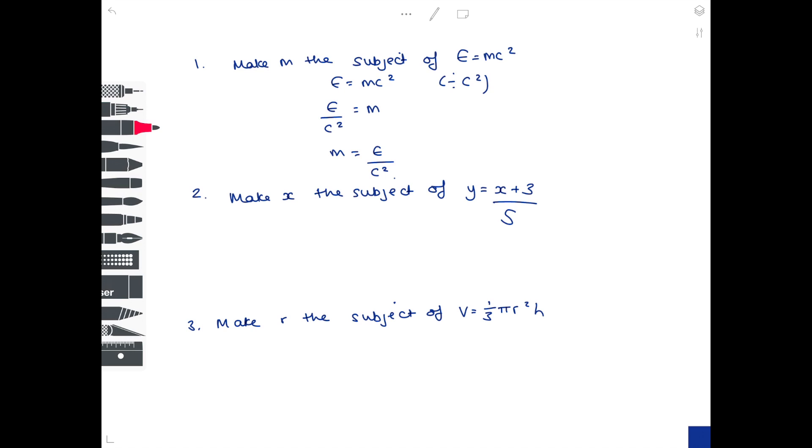In question two, make x the subject of y equals x plus 3 over 5. So the first difficulty here is that the x is being divided by 5. And we need to remove that 5.